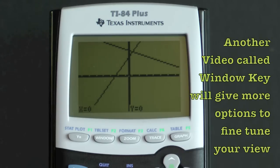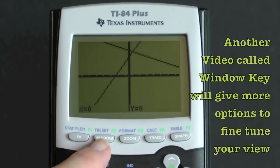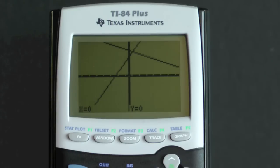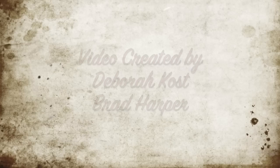The video about using the window key explains how you can control the window view manually to get exactly the screen area you desire. Combining the zoom key and the window key can help you in almost every graph situation.